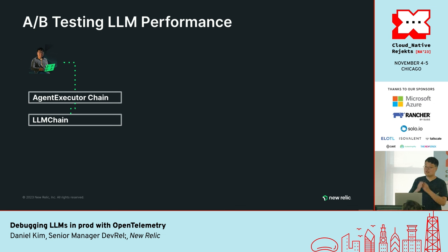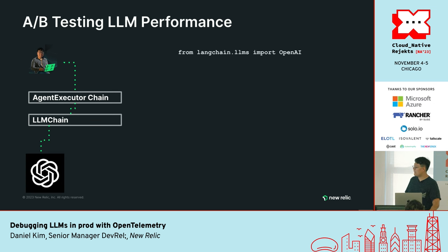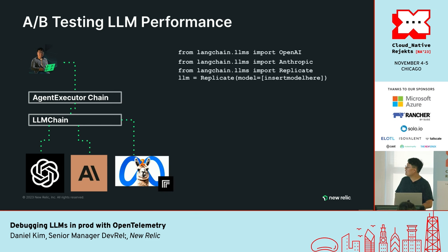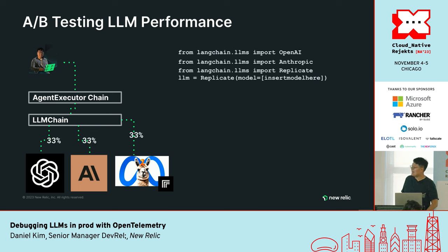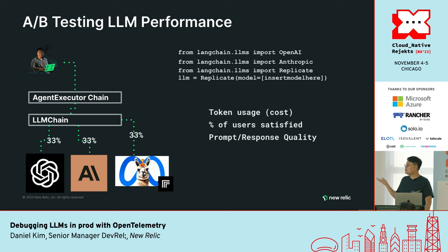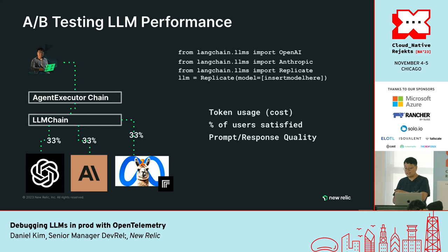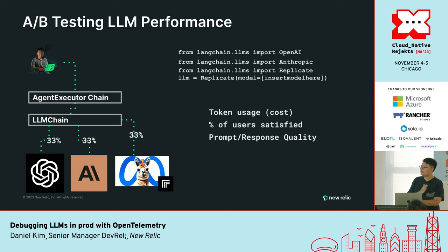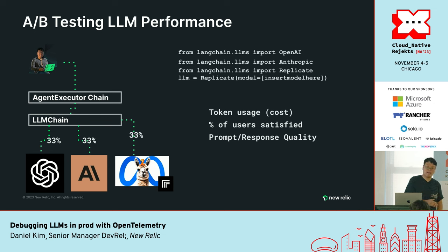A-B testing LLM performance is really important when you want to find the right LLM for the job. Let's say I import LangChain LLMs. I import the OpenAI library, I import the Anthropic library, and I import a Meta Llama 2 model hosted on a provider like Replicate — that's how you do it in LangChain. I shove it all into an array and start sending 33% of traffic to each LLM provider and monitor it. I can then track token usage cost, percent of user satisfied, prompt response quality, and a bunch of other metrics to figure out what is the most cost-effective and accurate provider. Unlike shopping for a regular SaaS vendor, you really don't know what models work best for your use case until you try it out.